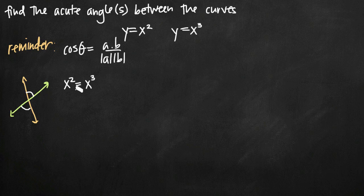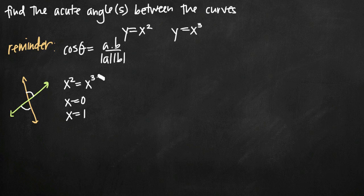For which values of x is this equation true? The only time this is going to be true is if x equals 0 — 0 squared equals 0 cubed, so 0 equals 0. Or when x is equal to 1: 1 squared is 1 and 1 cubed is 1. Negative 1 wouldn't work because we get positive 1 on the left-hand side and negative 1 on the right-hand side when we cube it, so that equation wouldn't be satisfied. The only x values for which this equation works are x equals 0 and x equals 1.